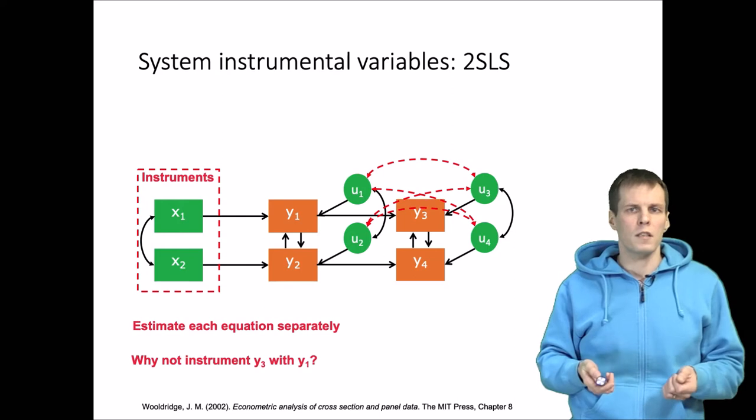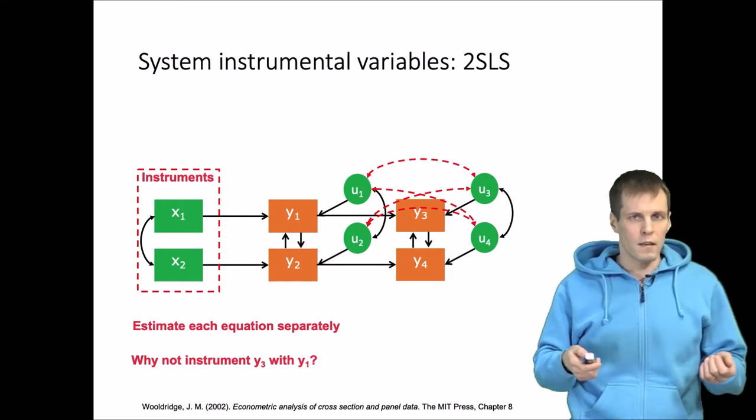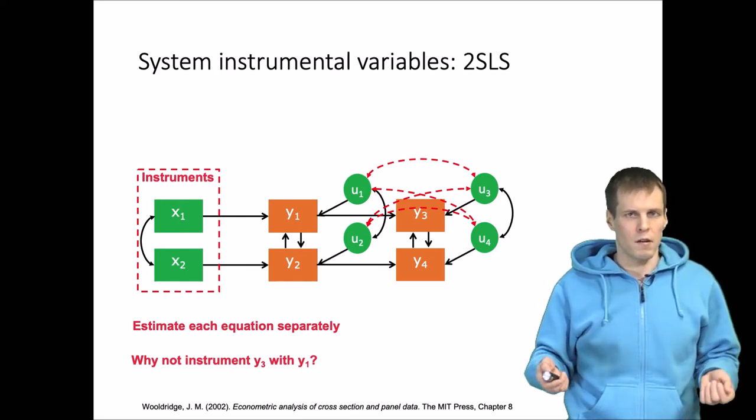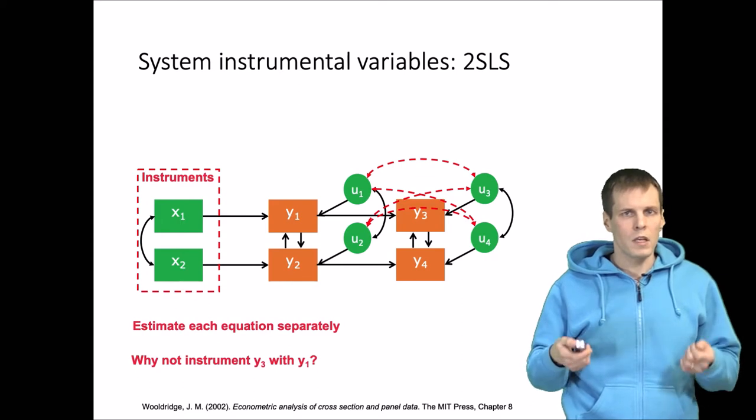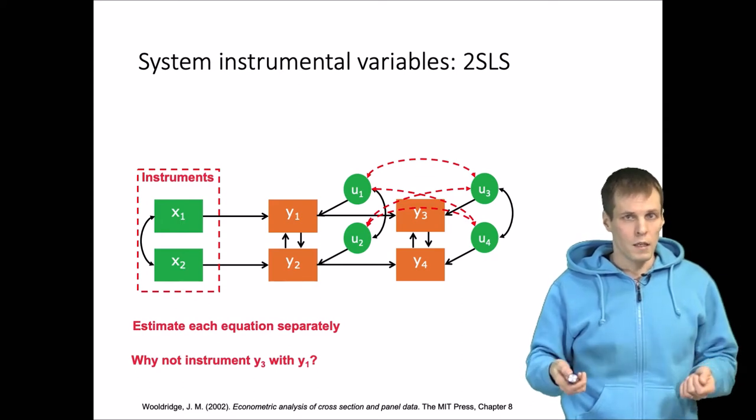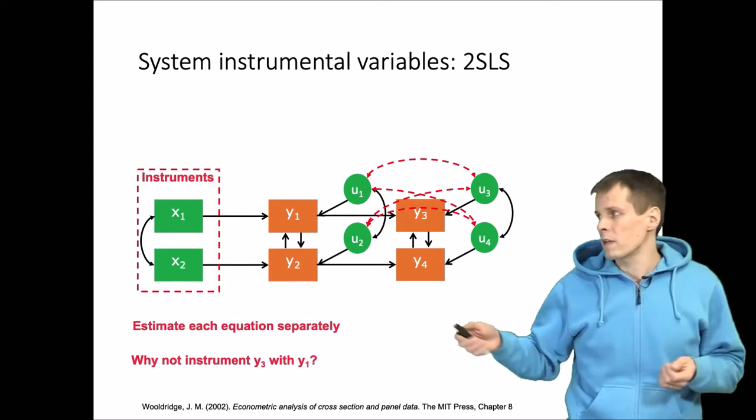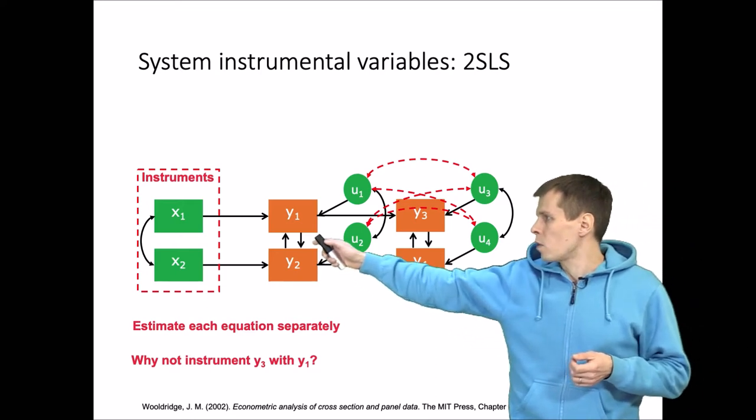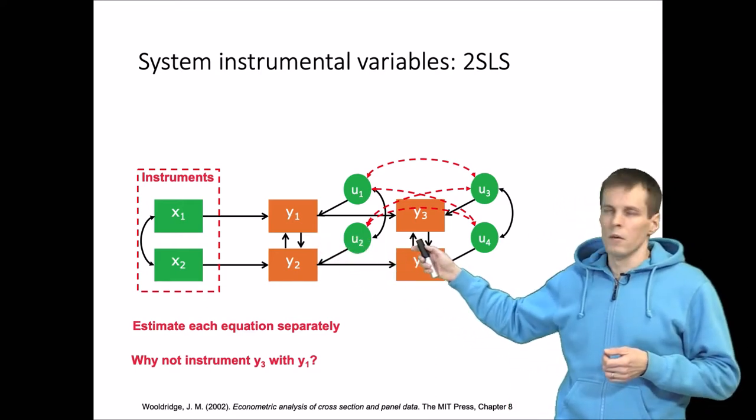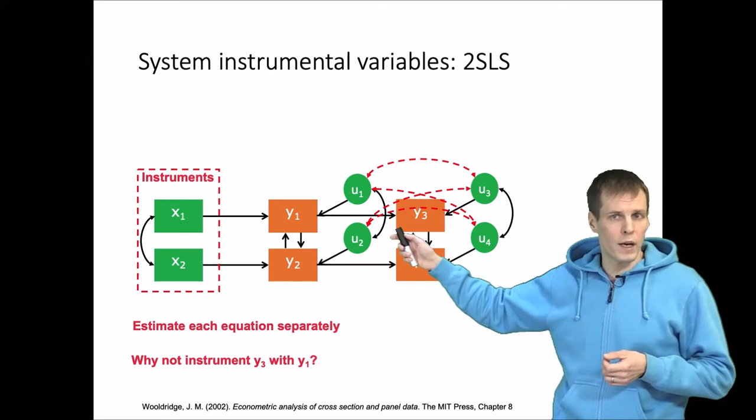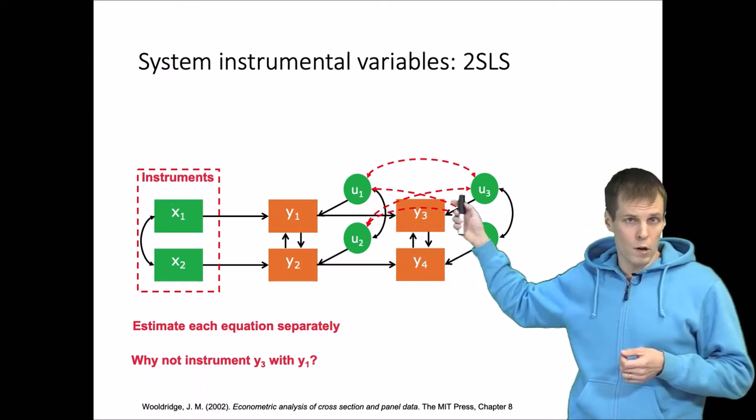Of course if we know that these errors are uncorrelated then that assumption is unnecessary, but that is something the estimator nevertheless applies. For that reason we cannot use y1 as an instrument for y3, because the estimator does not want to make the assumption that u1 would be uncorrelated with u3.